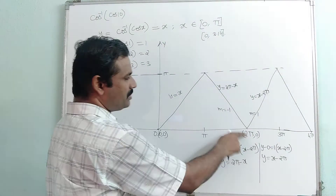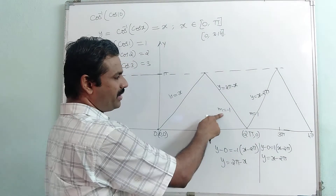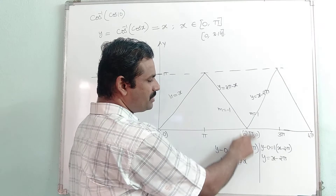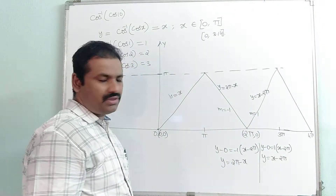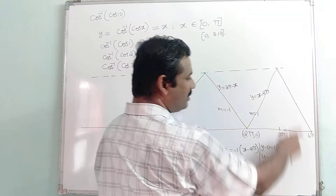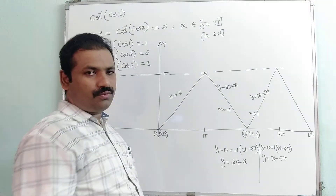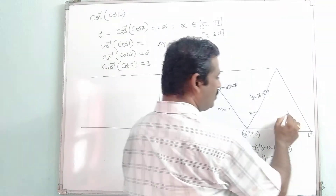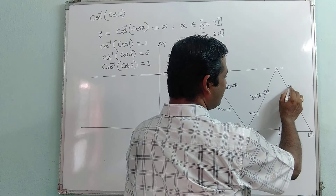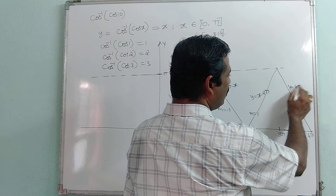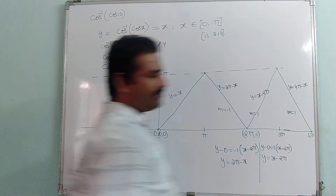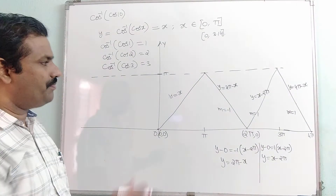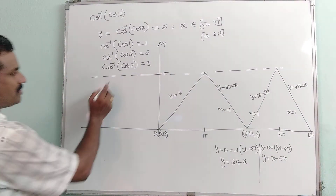So y equal to 2pi minus x passes through 2pi comma 0 with slope minus 1, and y equal to x minus 2pi passes through 2pi comma 0 with slope 1. The next line passes through 4pi comma 0 with slope minus 1, giving the equation y equal to 4pi minus x. This zigzag pattern continues on both sides, including from 0 to minus 2pi and so on.